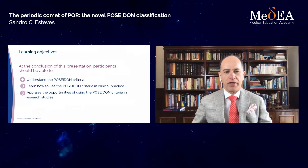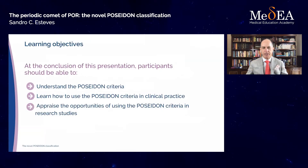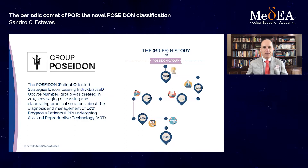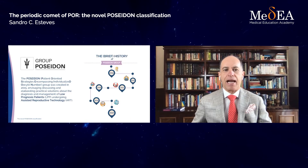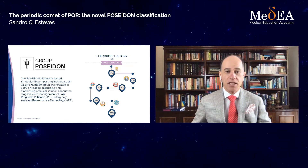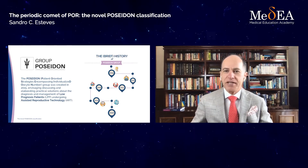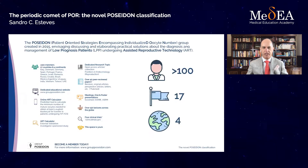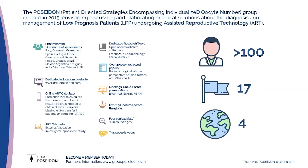I will also share some opportunities for using the Poseidon criteria in research studies. Poseidon is an acronym for Patient Oriented Strategies Encompassing Individualized Oocyte Number. It was created in 2015 by the initiative of Professor Carlo Alvigi from Italy. The idea was to discuss and elaborate practical solutions about the diagnosis and management of low prognosis patients undergoing ART. The group started with a few experts and now has more than 100 members from 17 countries and four continents.